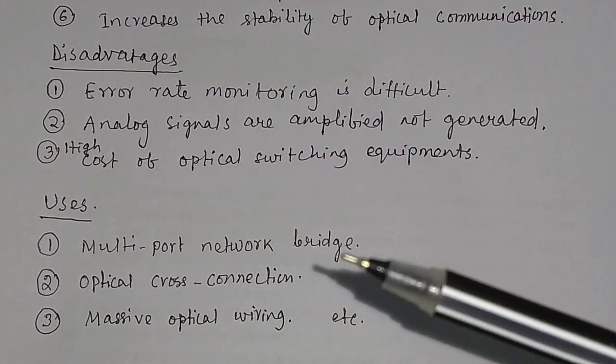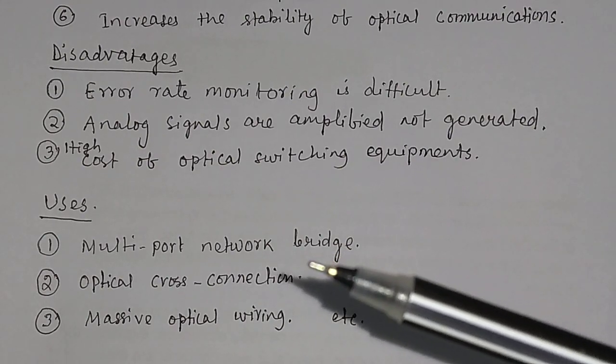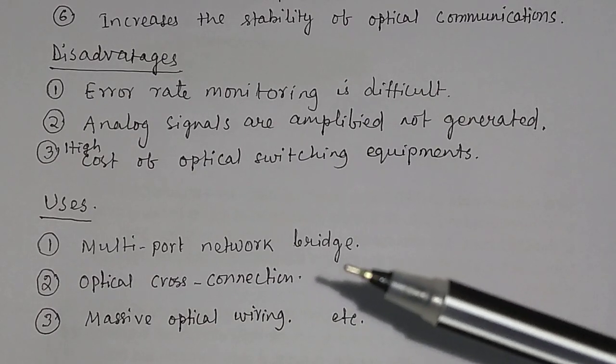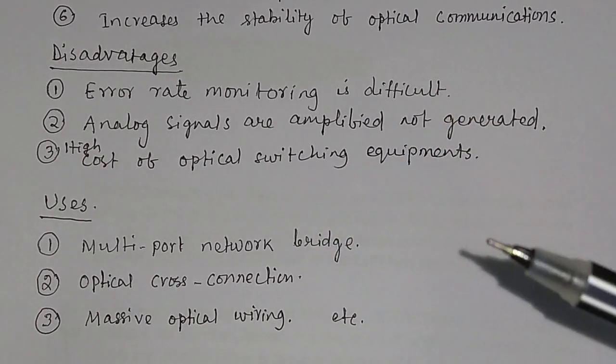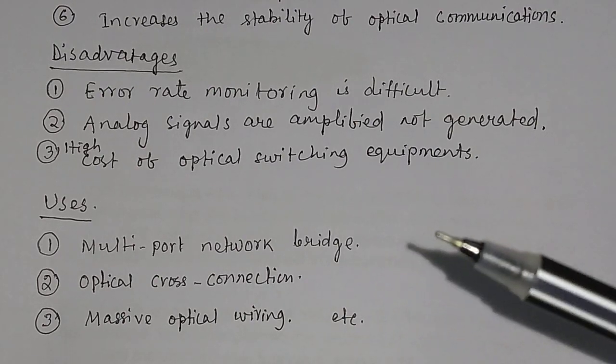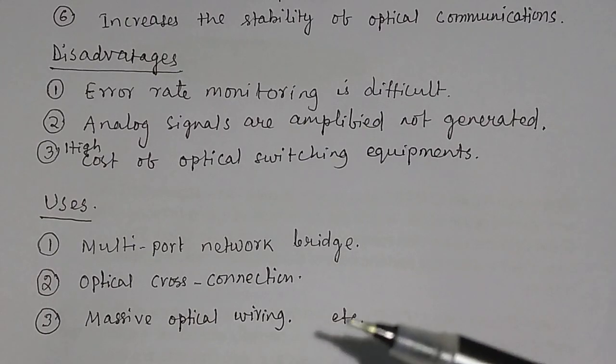And what are the different uses of optical switches? Optical switches are used in multiport network bridges. They are used in optical cross-connection. If you have cross-connection lines, then optical switches are very useful. Then they are also used in massive optical wiring.